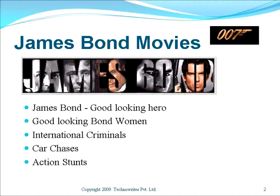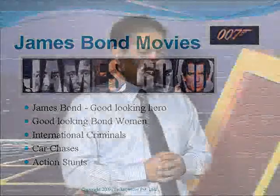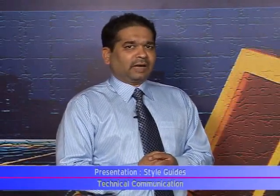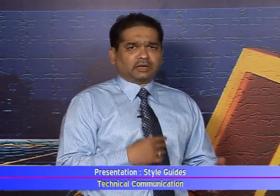I assume that you have written it down. Keep that definition of style handy so when we get to that slide, you can compare your definition with mine. Let us talk about James Bond movies. A James Bond movie will obviously have James Bond — a nice looking, heavily built, healthy, smart, tall hero. They will also have good looking Bond women, car chases, international criminals, and lots of action stunts, plus things like electronic gadgets and fancy cars.